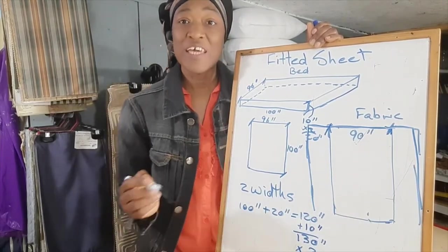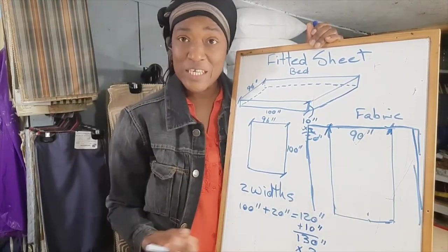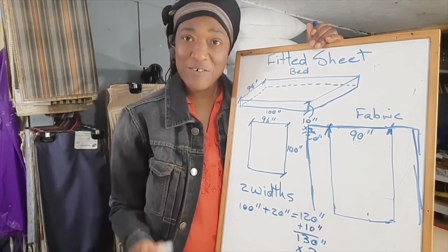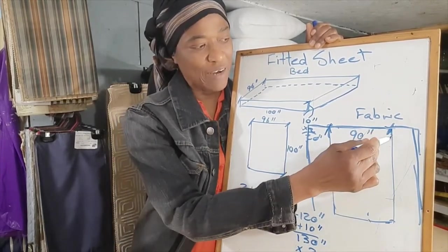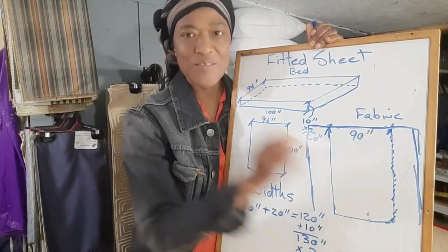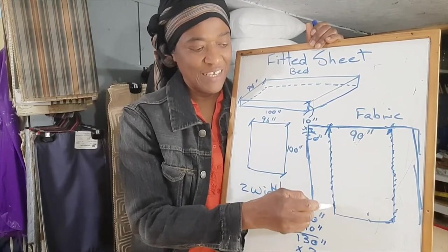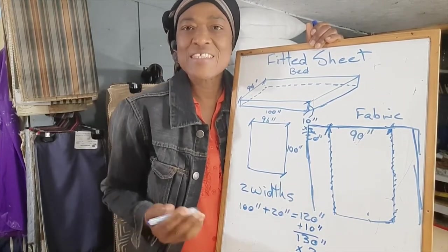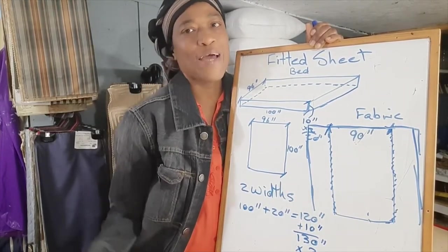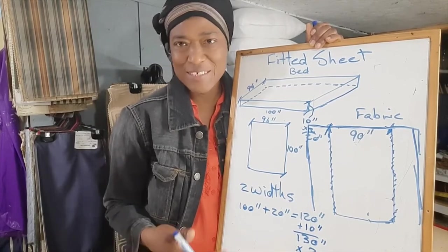Then, if your sewing machine affords you to do a decorative stitch, do a decorative stitch on the seam on both sides. This way it doesn't look like you had to join panels to make your sheet.